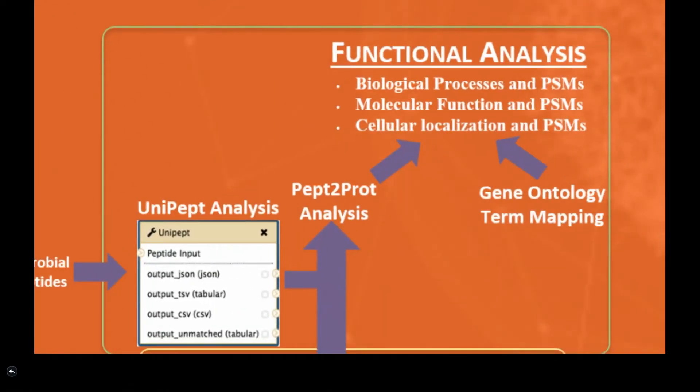Third, identifying the function of the proteins present in an environmental sample needs several components, which includes alignment tools that map functional annotations to the identified peptides or proteins.